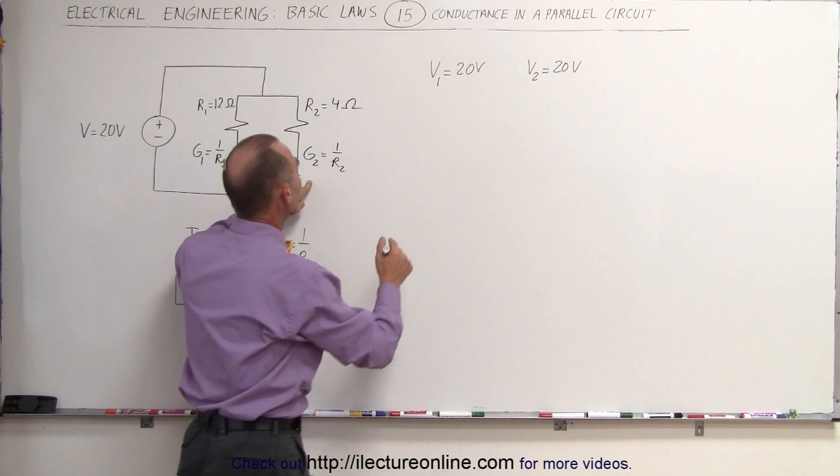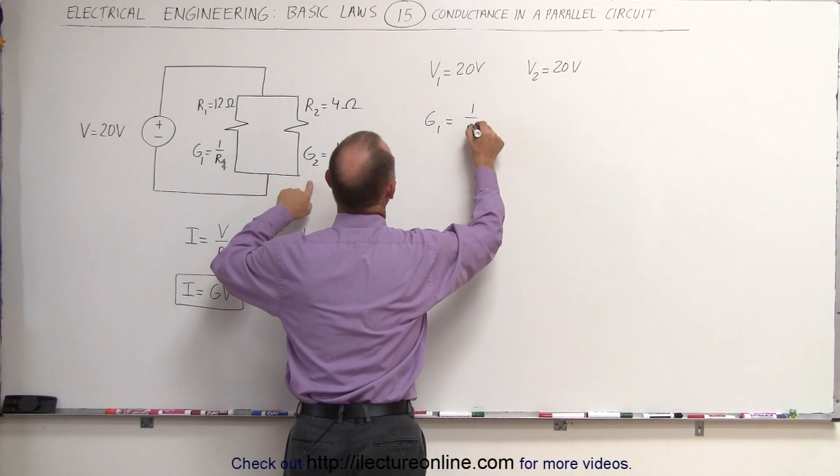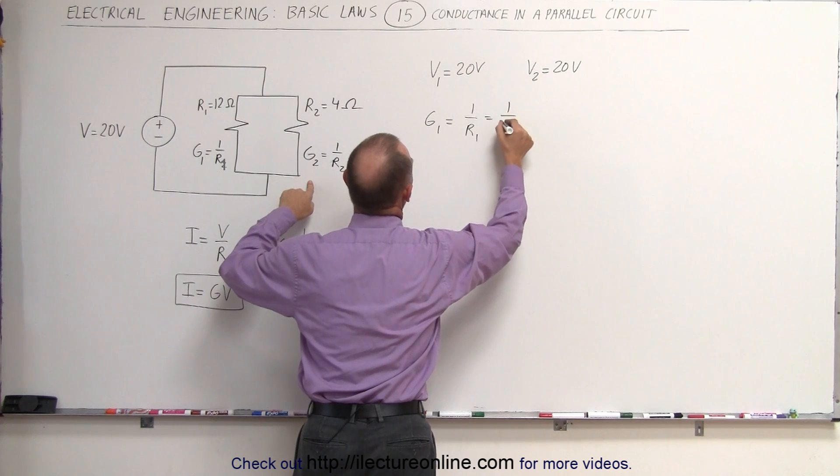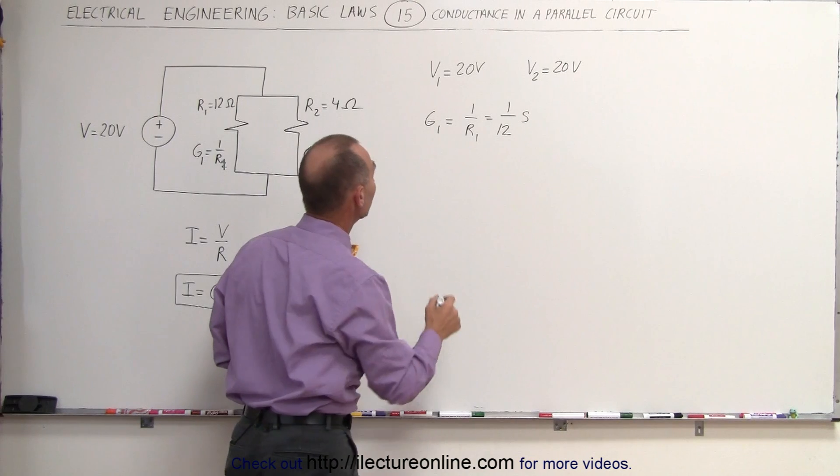And then calculating G1 and G2. G1 is equal to 1 over R1, which is equal to 1 over 12. That would be Siemens, because the unit for conductance is Siemens.